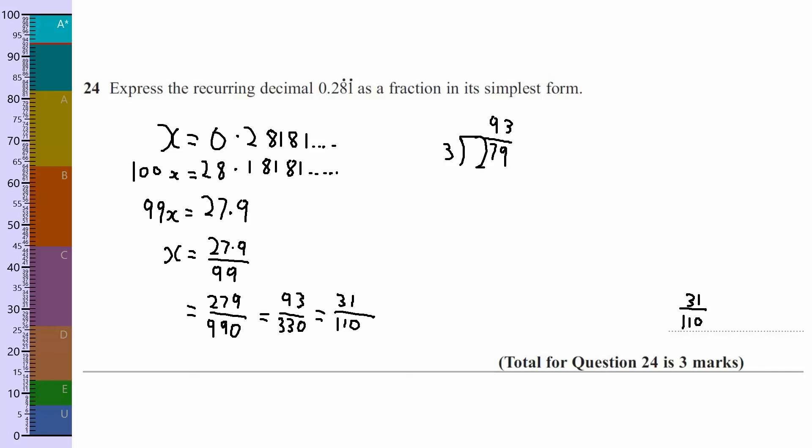There are other methods for doing that. Something I like doing is splitting up the recurring bit with the non-recurring digits. So I would write that out as 0.2 plus 0.081 recurring. And then I know 0.2 is a fifth, and then try and get that on later on. But some people find this way much easier.